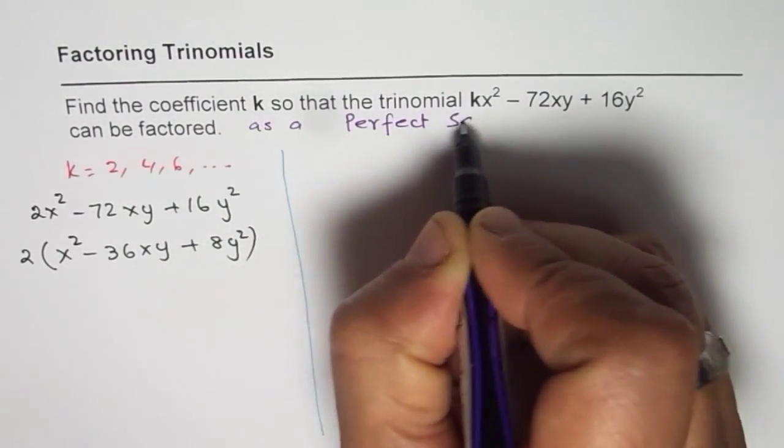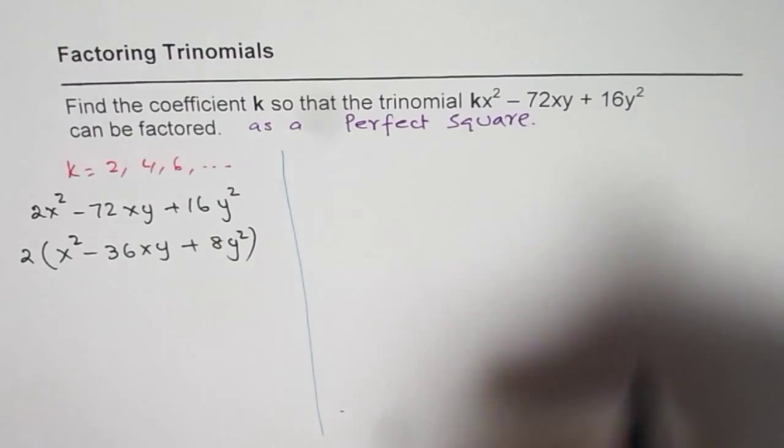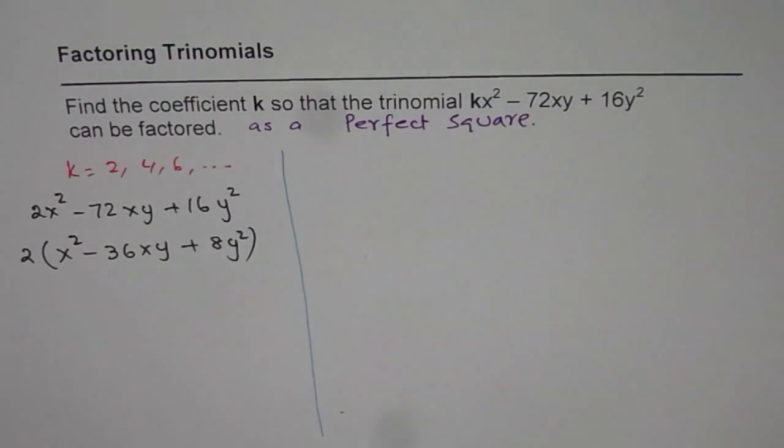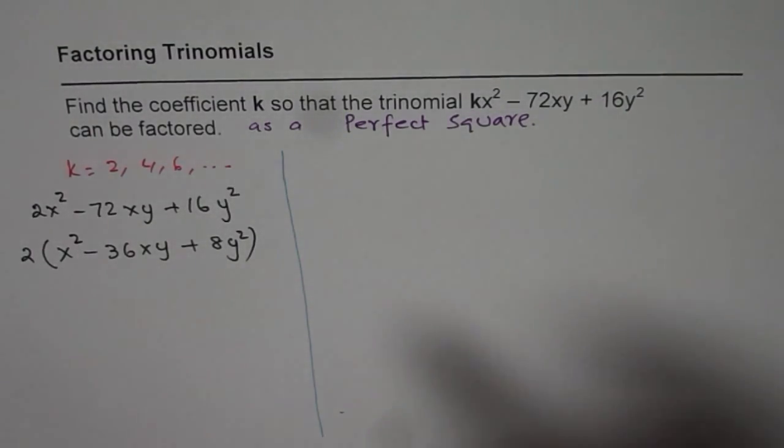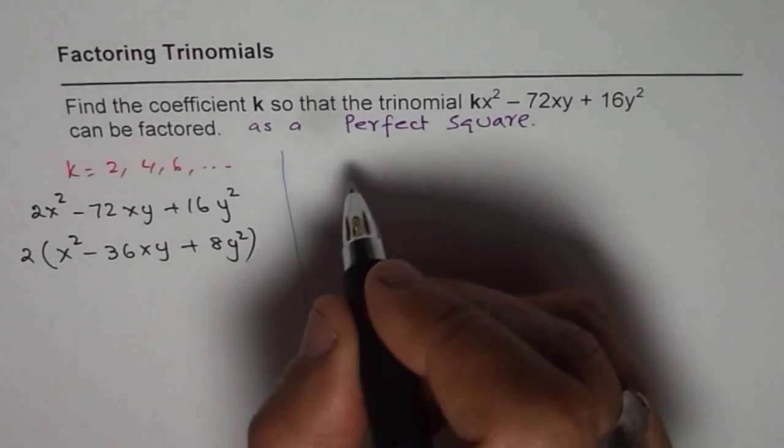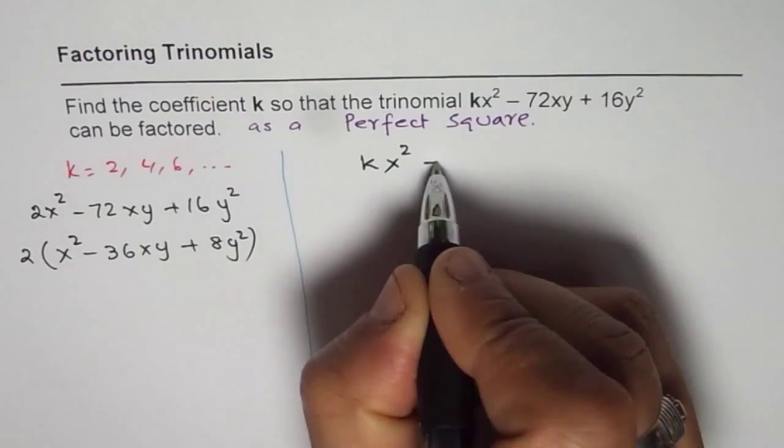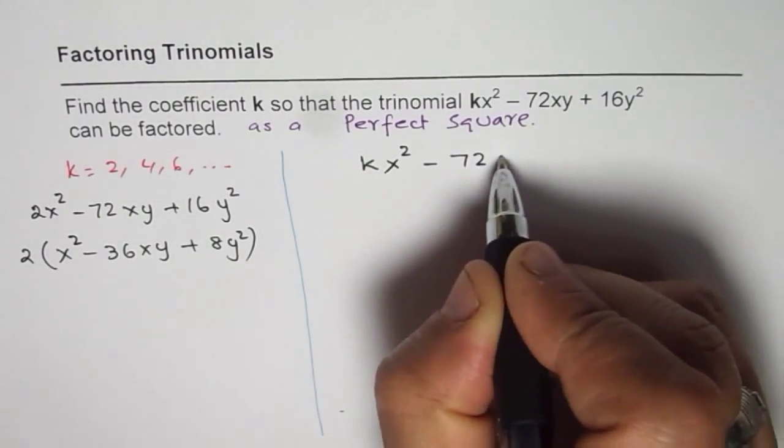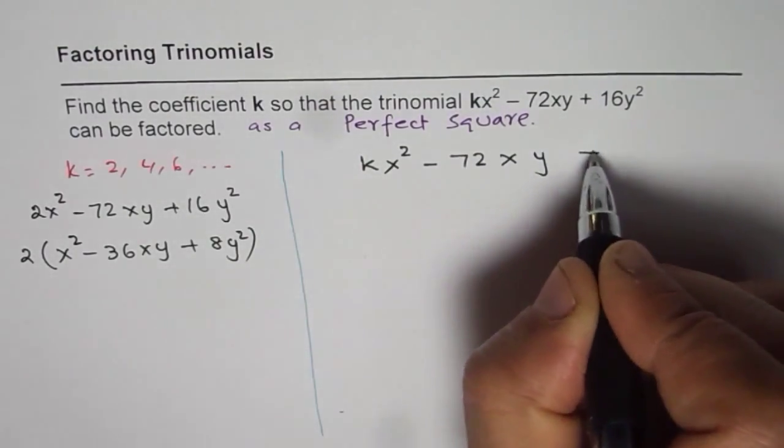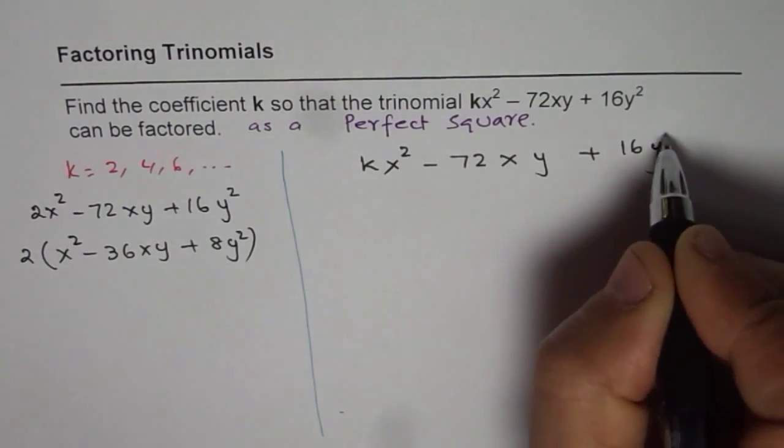So perfect square. Now in that case, the solution is what is really expected. Then how to find this solution? Let's go back to that. So we have kx² - 72xy + 16y².